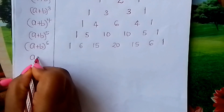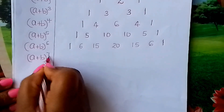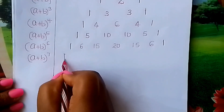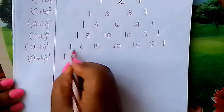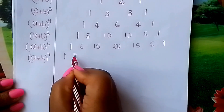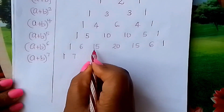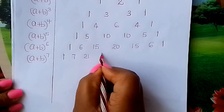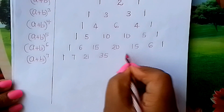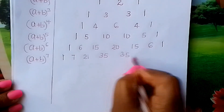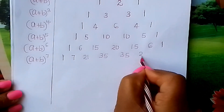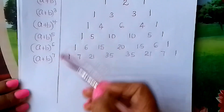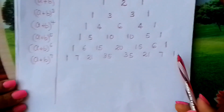Maybe I can do one more: (a + b) raised to 7. What would be the coefficients? Fix 1 in a slanting manner. This plus this gives us 7. This plus this gives us 21. This plus this gives us 35. This plus this gives us 35. This plus this gives us 21. This plus this gives us 7. And finally, 1. Pascal's triangle of coefficients.